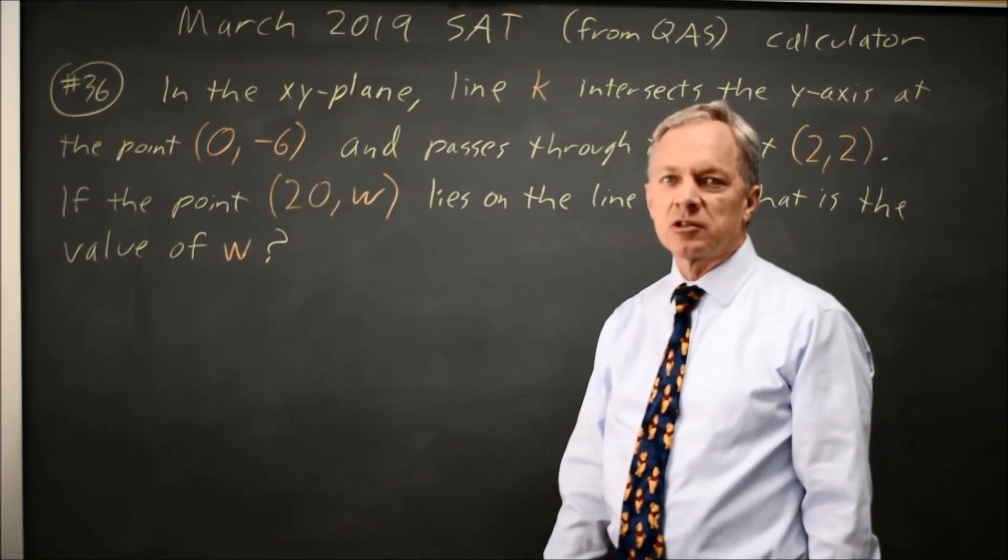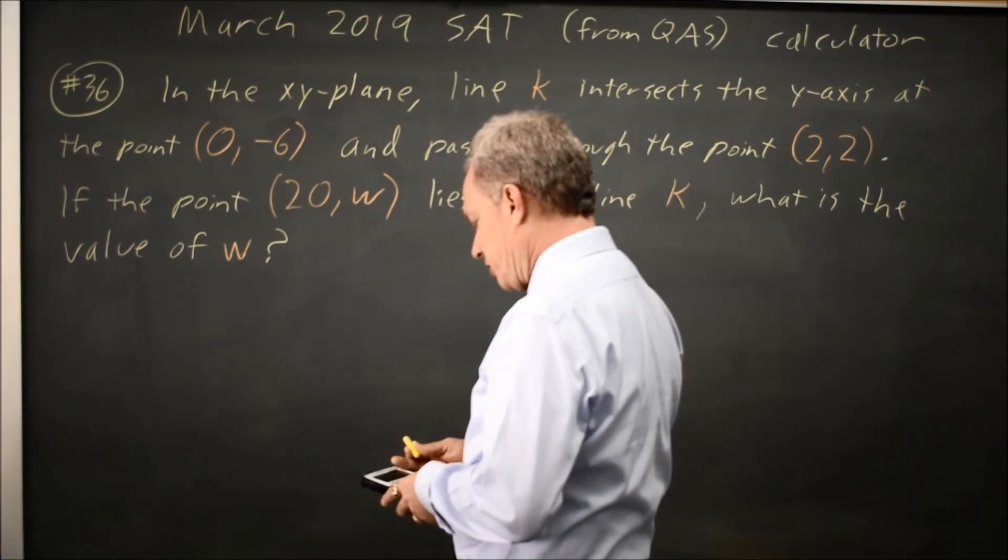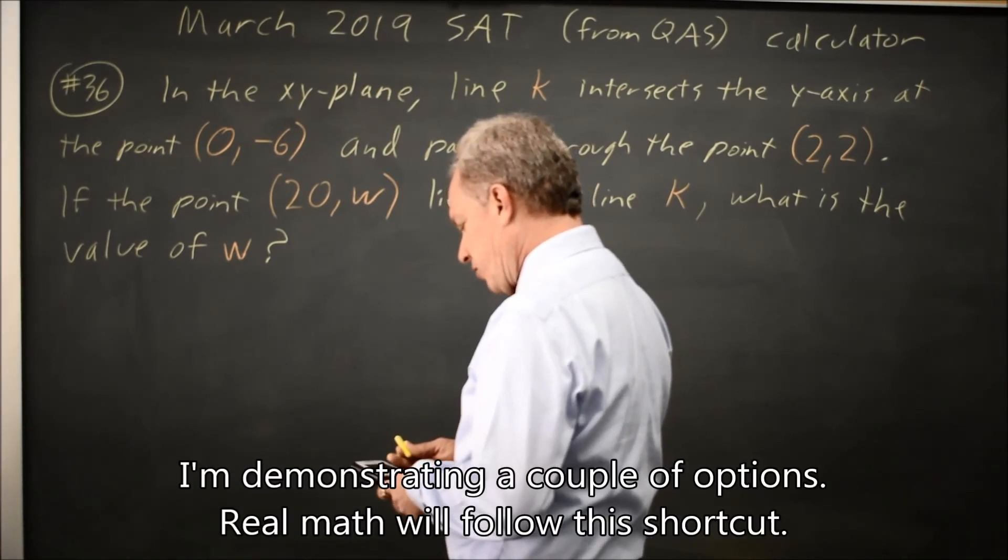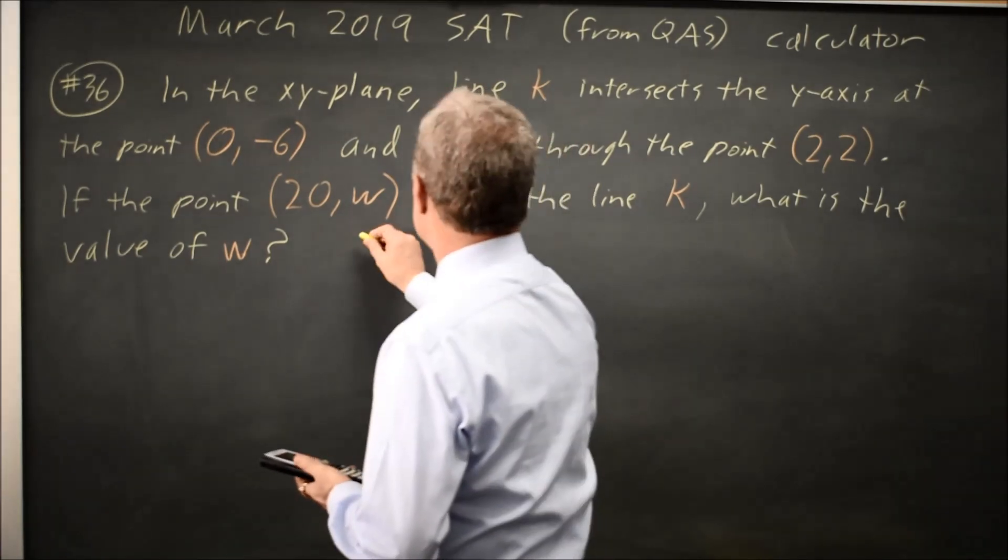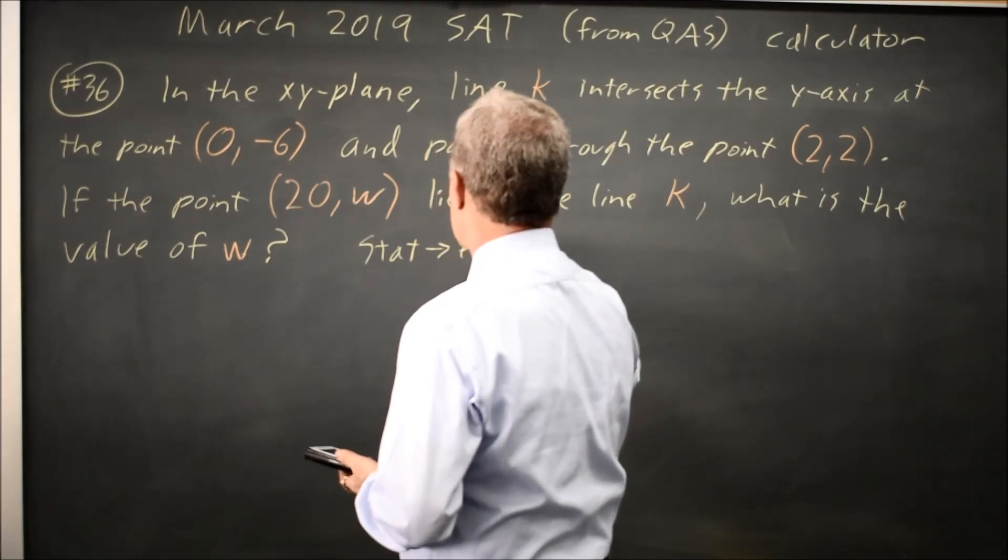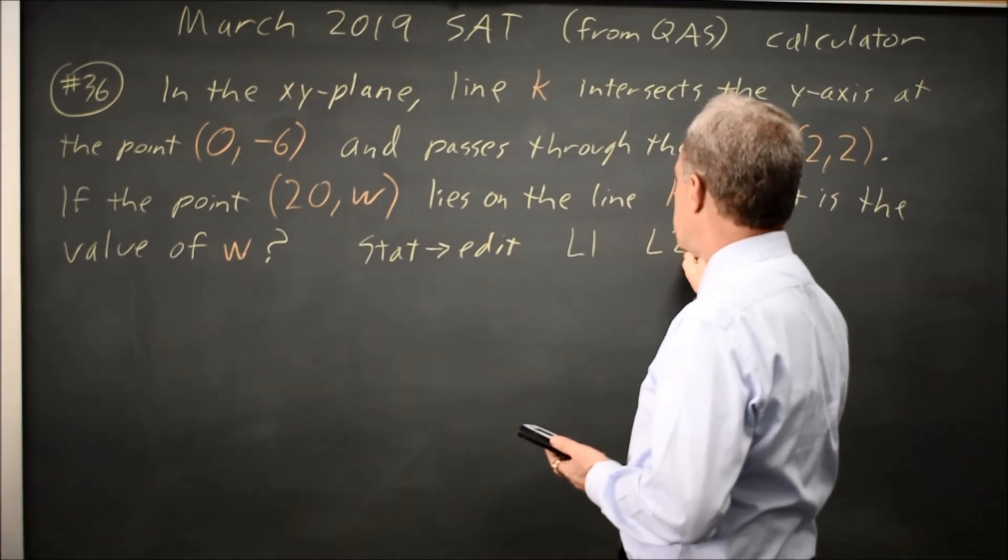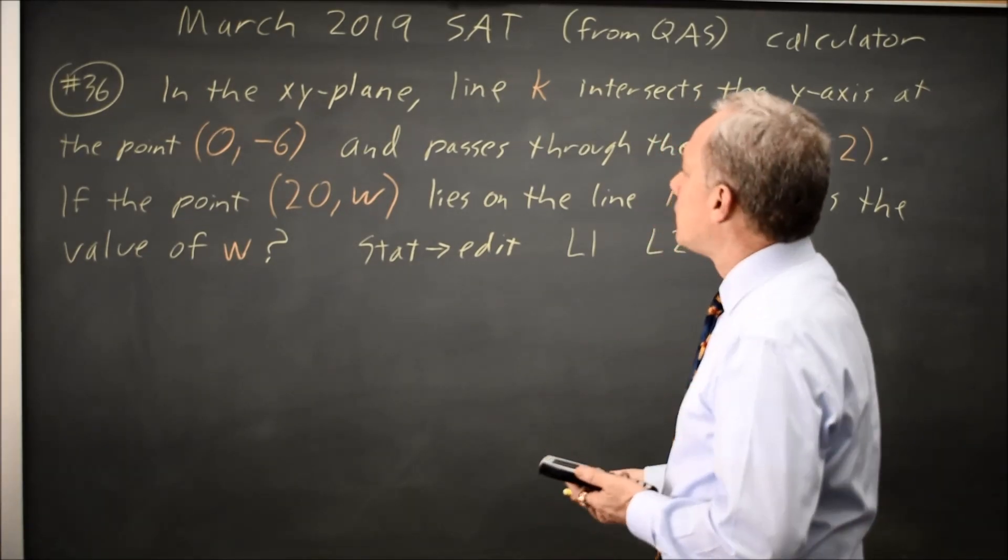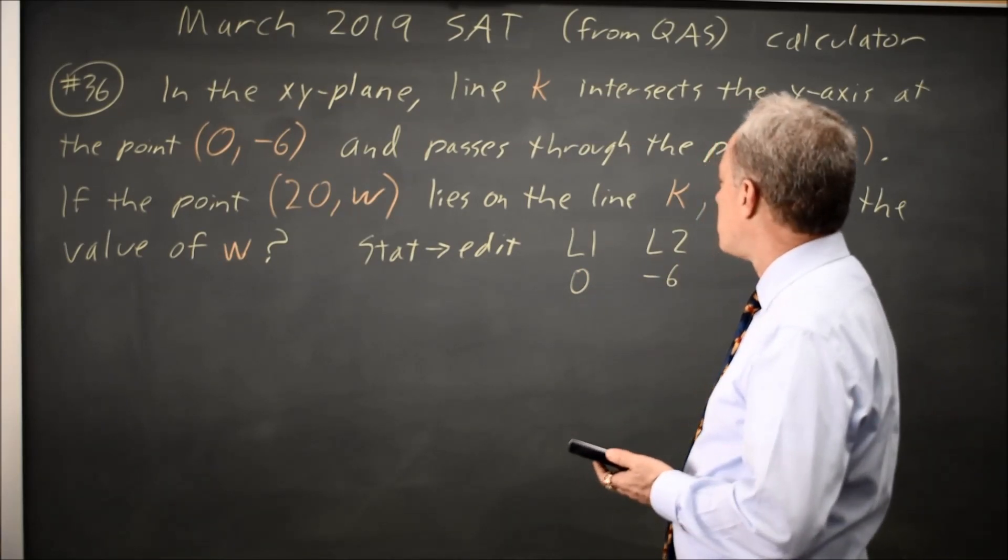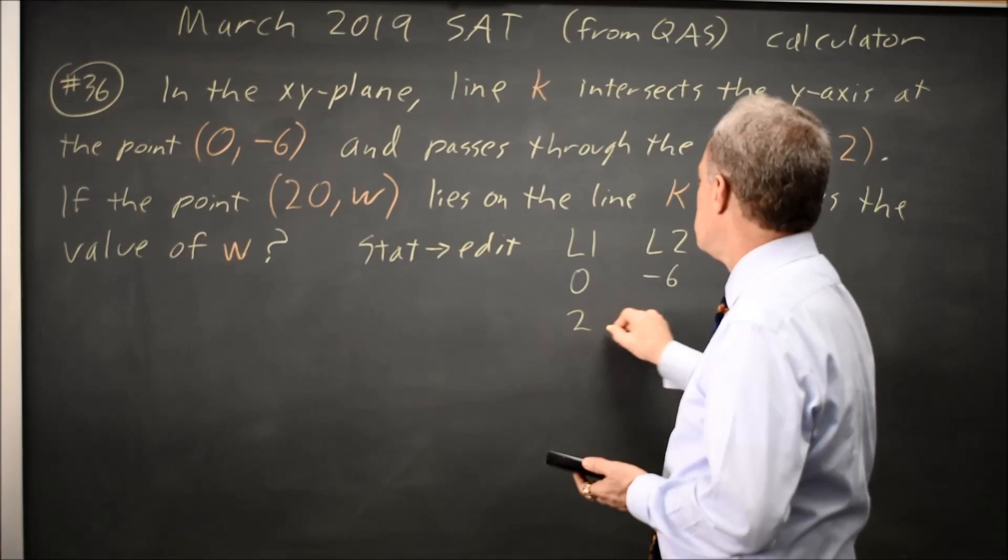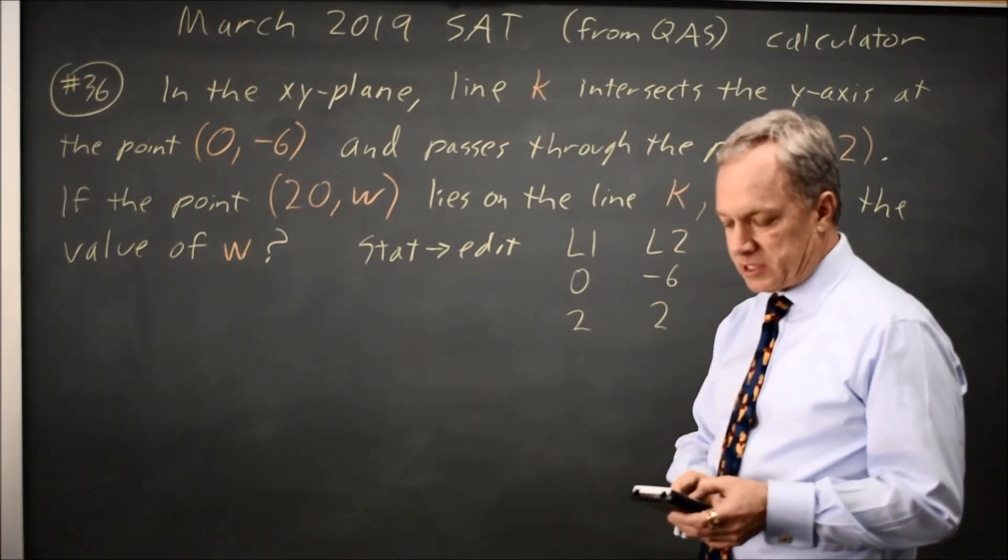Since this is a calculator question, I'm going to use the calculator linear regression feature. First I'll go to Stat Edit and under L1 and L2 for list 1 and list 2, I'll put the first point (0, -6) with x coordinate in L1, y coordinate in L2 and the second point (2, 2) with x in L1 and y in L2.